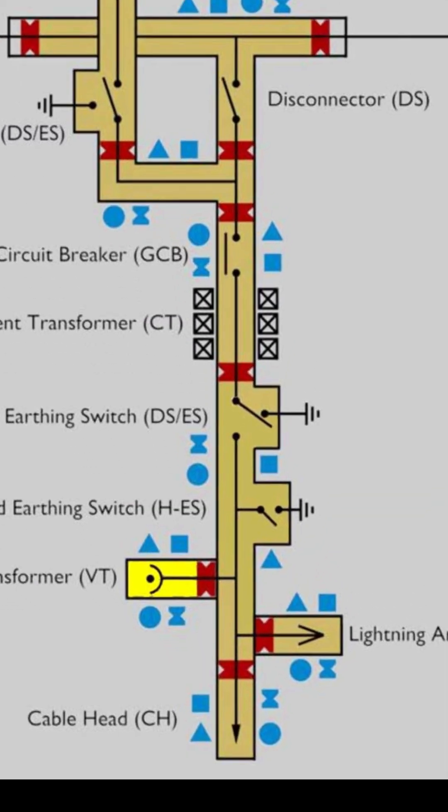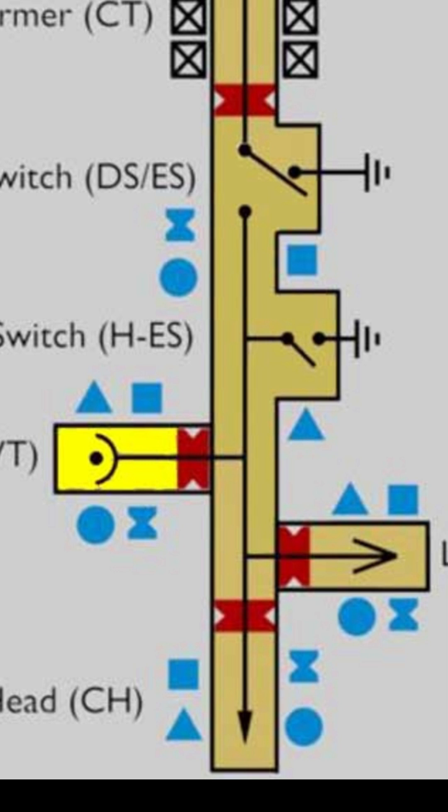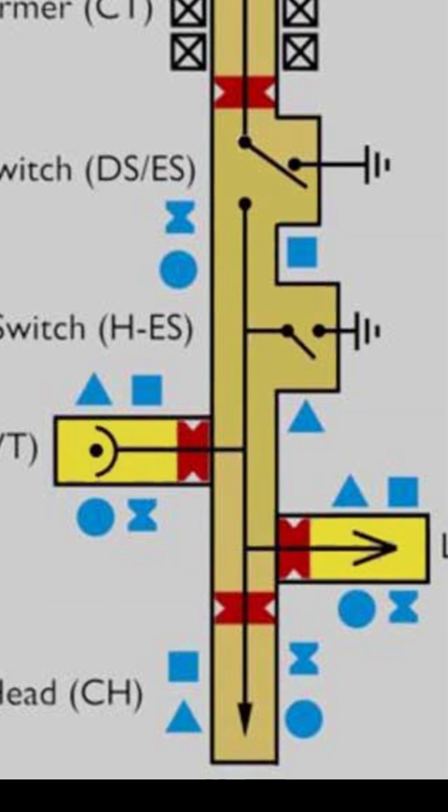This is the voltage transformer module, and this is also isolated by providing a gas-tight barrier. This is the lightning arrester module.